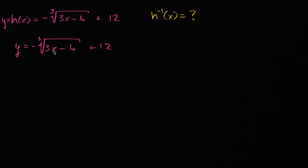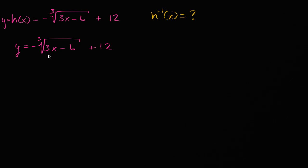What we could do is try to solve for x. If we solve for x, we're going to have some expression that's a function of y, and that would be the inverse mapping. Another way to do that is to swap x and y and then solve for y, but that's a little bit less intuitive that this is actually the inverse. So let's just solve for x here.